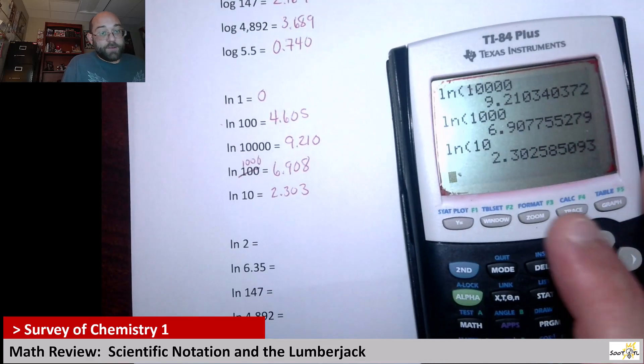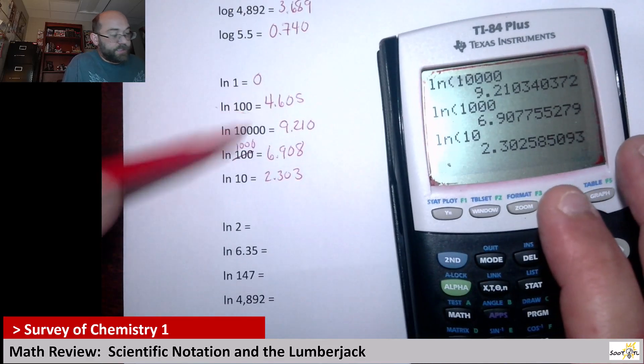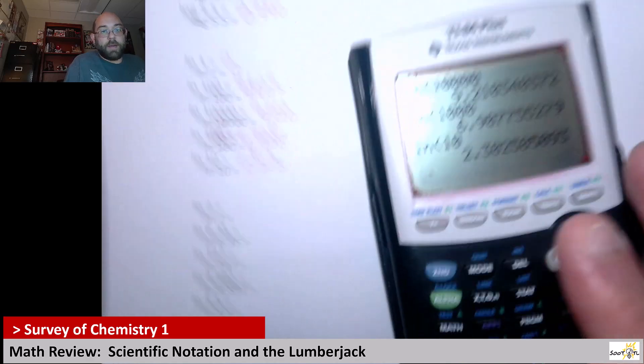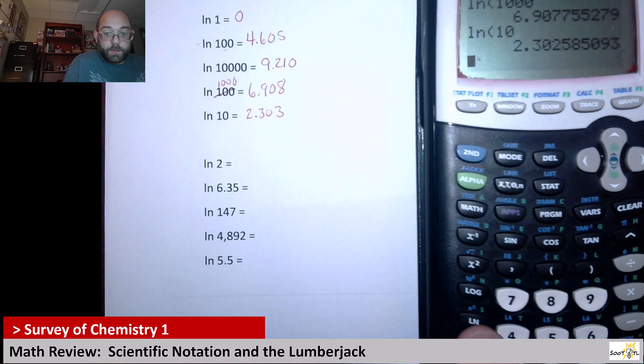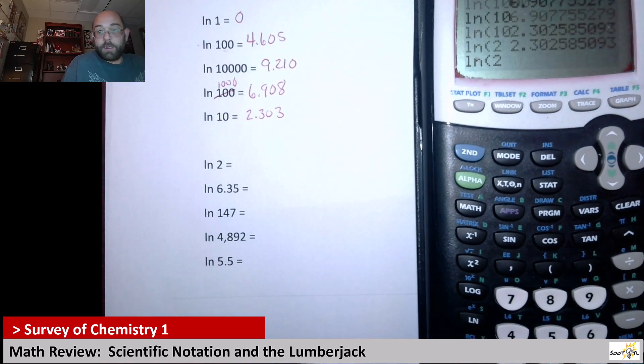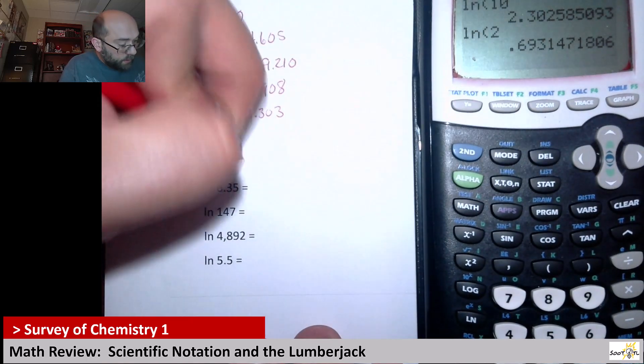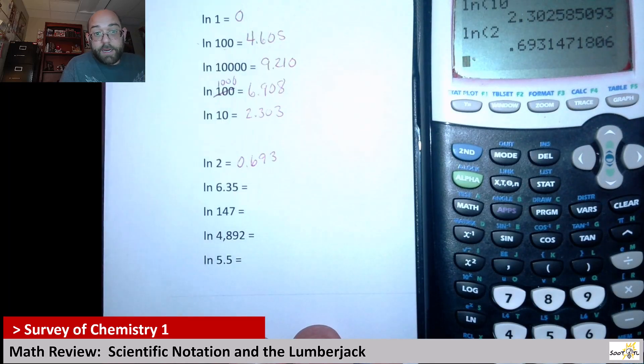And then, so for natural logs, it's not easy. You don't just count the zeros. Now, also natural log of 2. Let's see. What do we get here for natural log of 2? So natural log of 2 is 0.693.